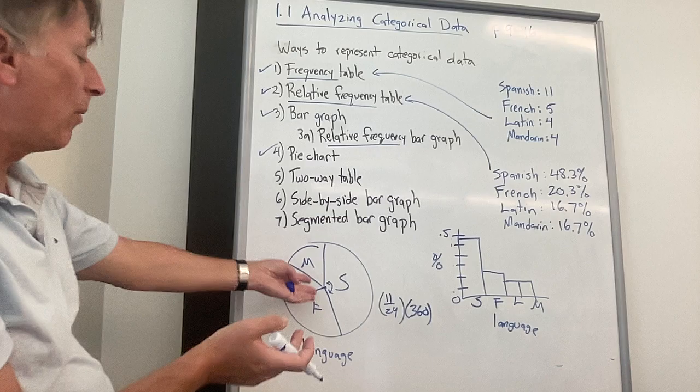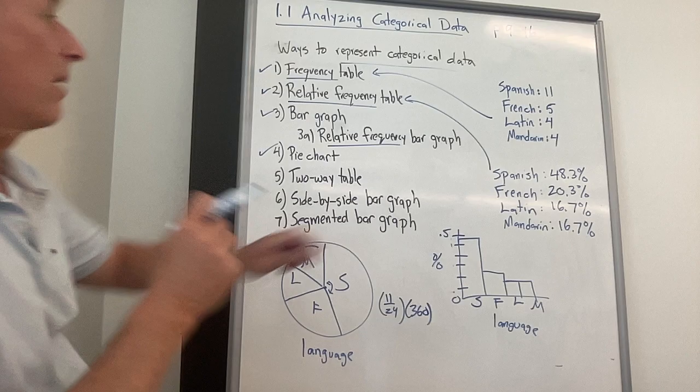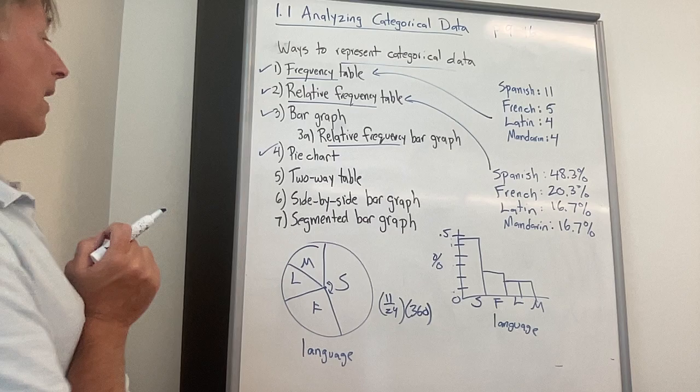The advantage of a pie chart is some people find pie charts easier to look at than bar graphs. They all do a relatively good job of representing the categorical data visually. So these are four ways that we can talk about. Here's your frequency table. Here's your relative frequency table. This is a bar graph. Technically, it's a relative frequency bar graph. And then there's your pie chart.